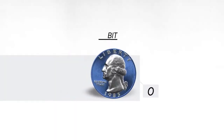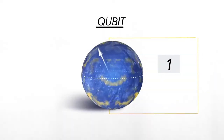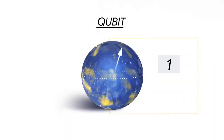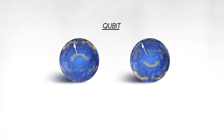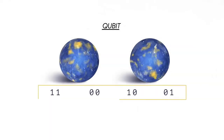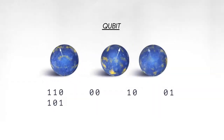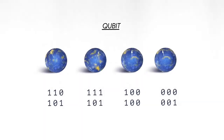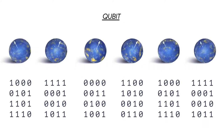The classical bit stores information as a zero or one. A quantum bit can be both zero and one at the same time. If you have two quantum bits, there are four possible states that you can put in superposition. With three qubits it's eight, four qubits it's 16. It grows exponentially.